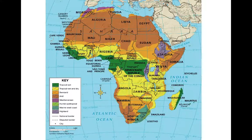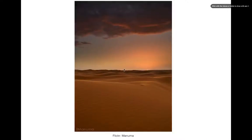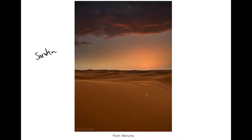Now I'm going to show you some pictures of the vegetation and climate regions of Africa. This first one is obviously the Sahara — flat, dry, not a lot of rainfall, and therefore it's not going to support a lot of life. A lot of people that live here are nomadic herders.